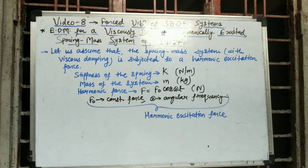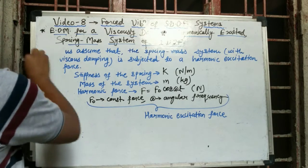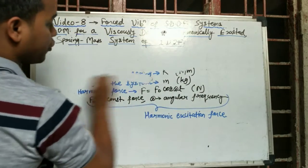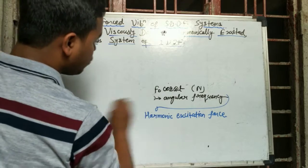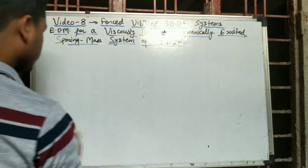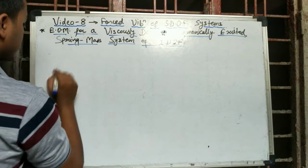We can get the equation of motion by applying Newton's second law or D'Alembert's principle — either can be applied to get the equation of motion for a system subjected to harmonic excitation force. I'll draw the diagram for the system, apply the harmonic force to it, and then apply Newton's second law of motion to get the equation of motion.